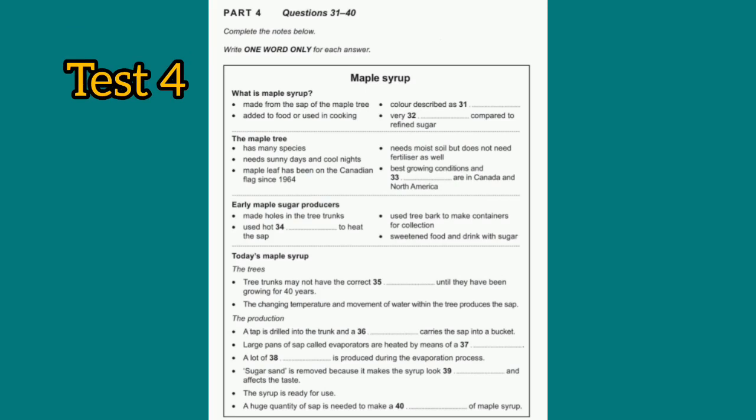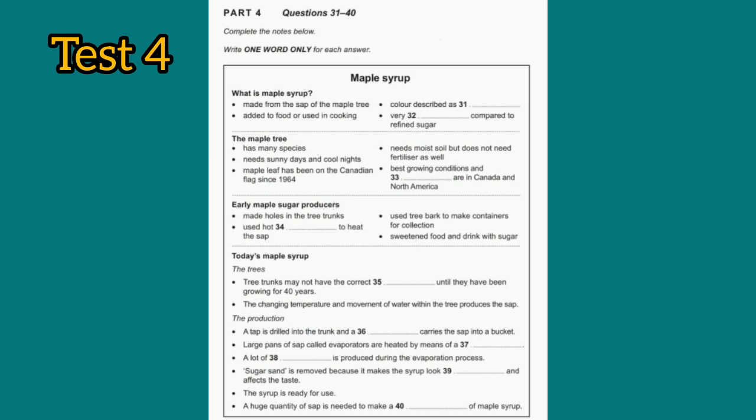Now listen carefully and answer questions 31 to 40. Hello, everyone. Today, we're going to look at another natural food product, and that's maple syrup. What is this exactly? Well, maple syrup looks rather like clear honey, but it's not made by bees. It's produced from the plant fluid, or sap, inside the maple tree, and that makes maple syrup a very natural product.